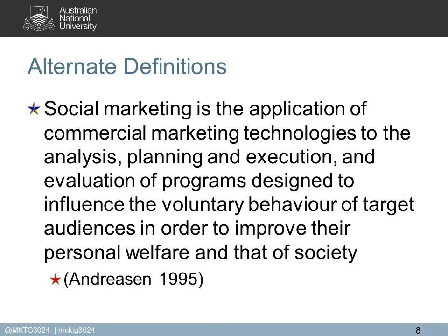The other major influential definition is the Andreasen 1995 definition, which has significantly influenced the teaching of social marketing. The Andreasen framework applies commercial marketing technology — very similar to Kotler's elements, but specifying that this is about commercial marketing. It covers analysis, planning, and execution, and adds the concept of evaluation — so analysis, planning, execution, and evaluation form the full cycle. Again, it focuses on programs rather than one-off events. One of the big shifts here is the move from influencing the acceptability of an idea to influencing the voluntary behavior of a target audience for the goal of that person's welfare and the benefit of society.